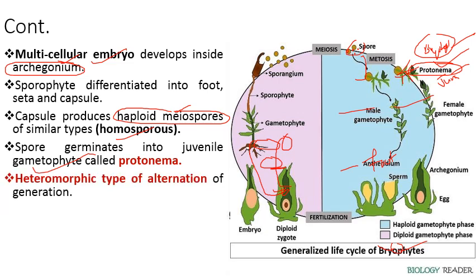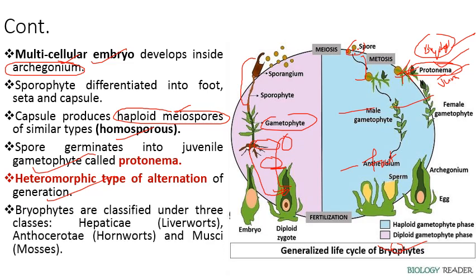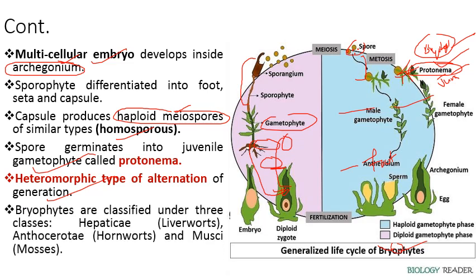The life cycle is a heteromorphic type of alternation of generation — 'hetero' means different, 'morphic' means shape. The gametophyte and sporophyte are two plant bodies that differ from one another. Bryophytes are classified into three classes: Hepaticopsida (liverworts), Anthocerotopsida (hornworts), and Bryopsida (mosses).